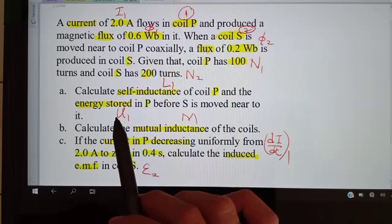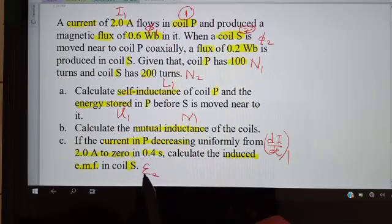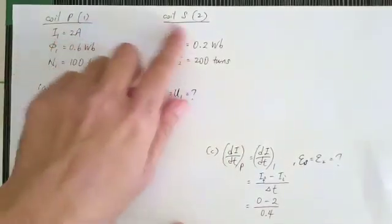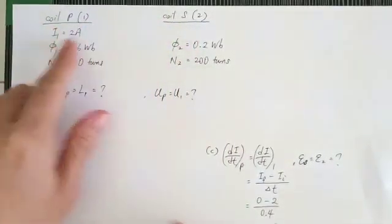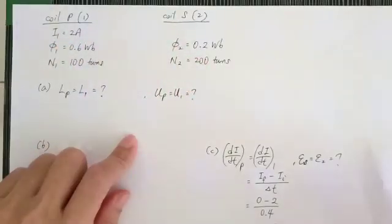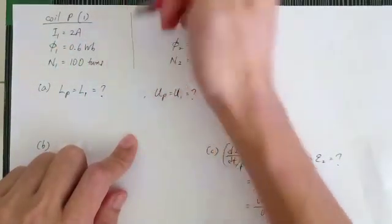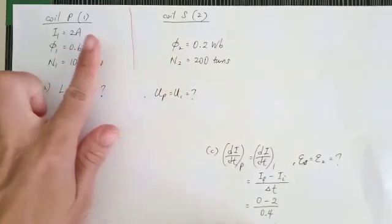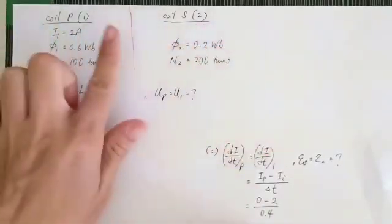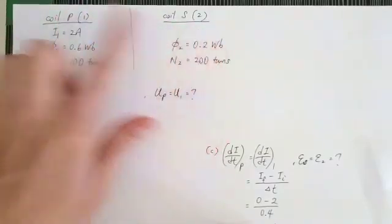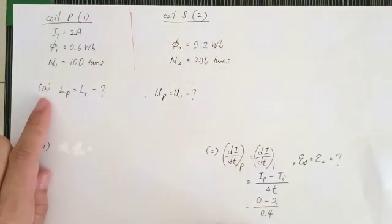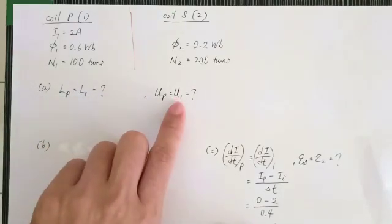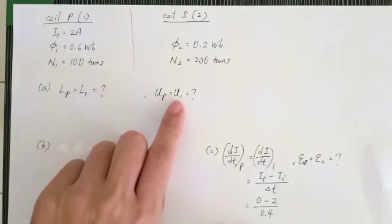So we need to find L1, U1, M, and E2. All the information for coil P and coil S has been separated into two columns — one for coil one and one for coil two — for more systematic data organization. Always set up your data in two columns like this.